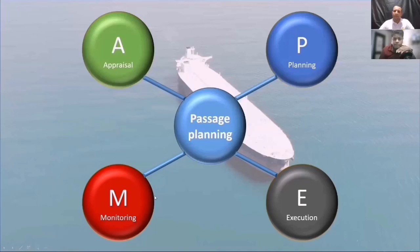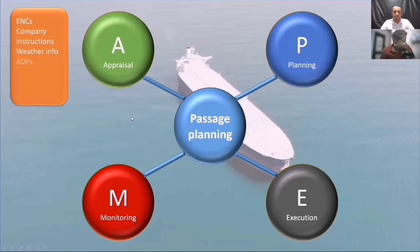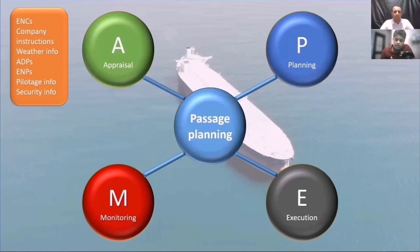These are the four steps of passage planning. If you understand these steps one by one individually, you will be an expert. So let's start with the appraisal. In the appraisal stage, you are going to gather all the information from everywhere before you start plotting courses or anything. You have to make sure that all your ENCs are up to date. Someone asked me in one of the questions how to make sure your ENCs are up to date.